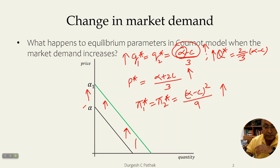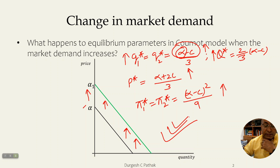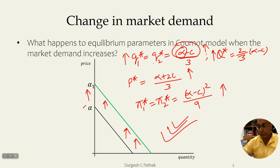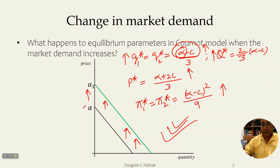So we realize that as the parameter alpha increases — that is, as market demand increases — everything increases in the Cournot model: the quantities produced by both firms, the equilibrium price, and the profits.